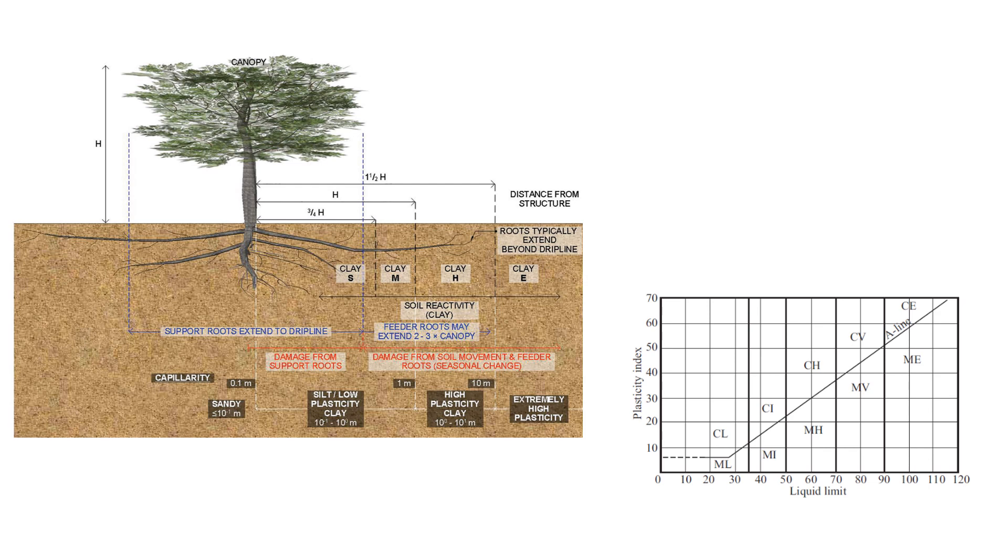This figure shows you what we need to consider. This is something that we need to consider when we decide to plant trees next to light engineering structures, for example, one story house. This is a very light structure and it can be lifted by reactive soil.